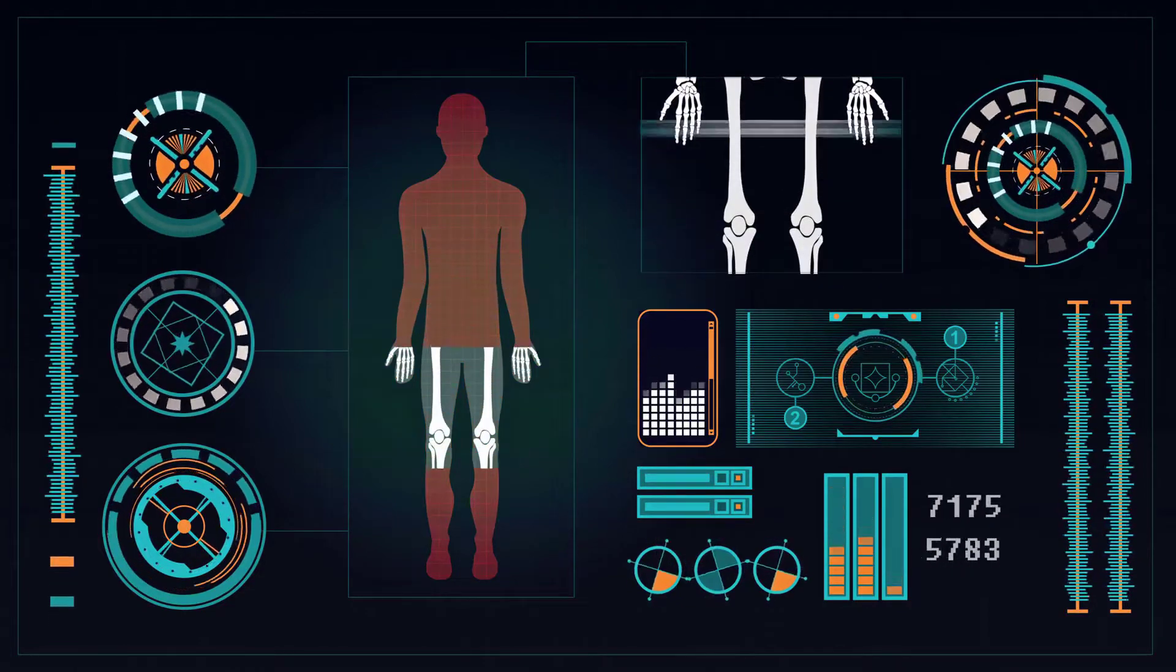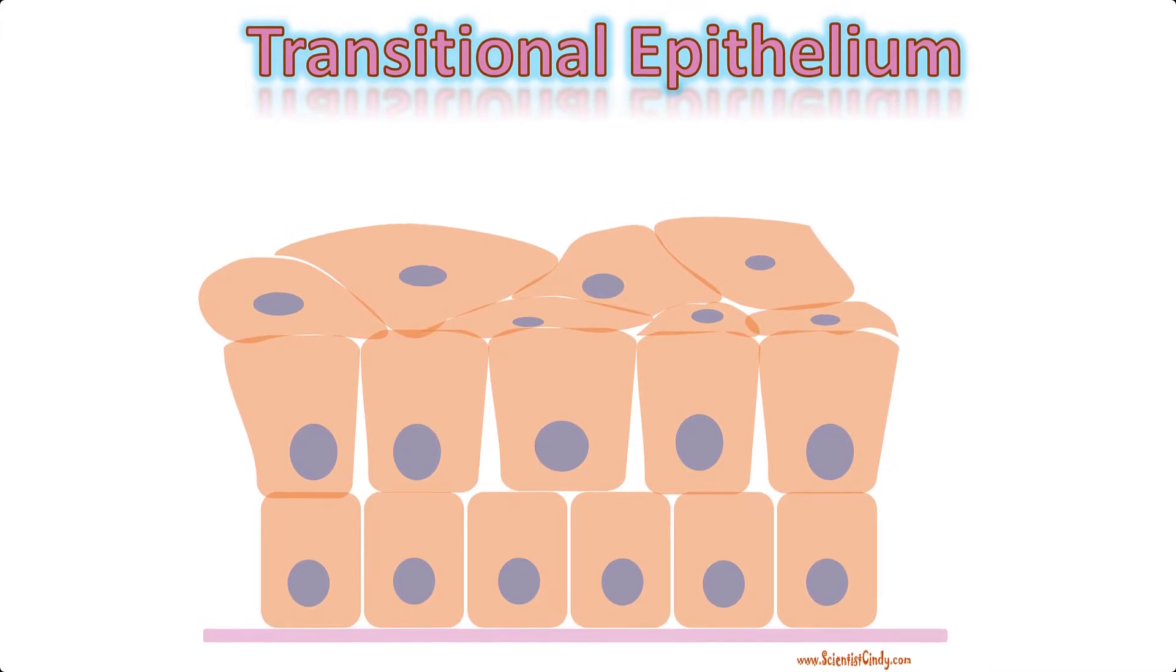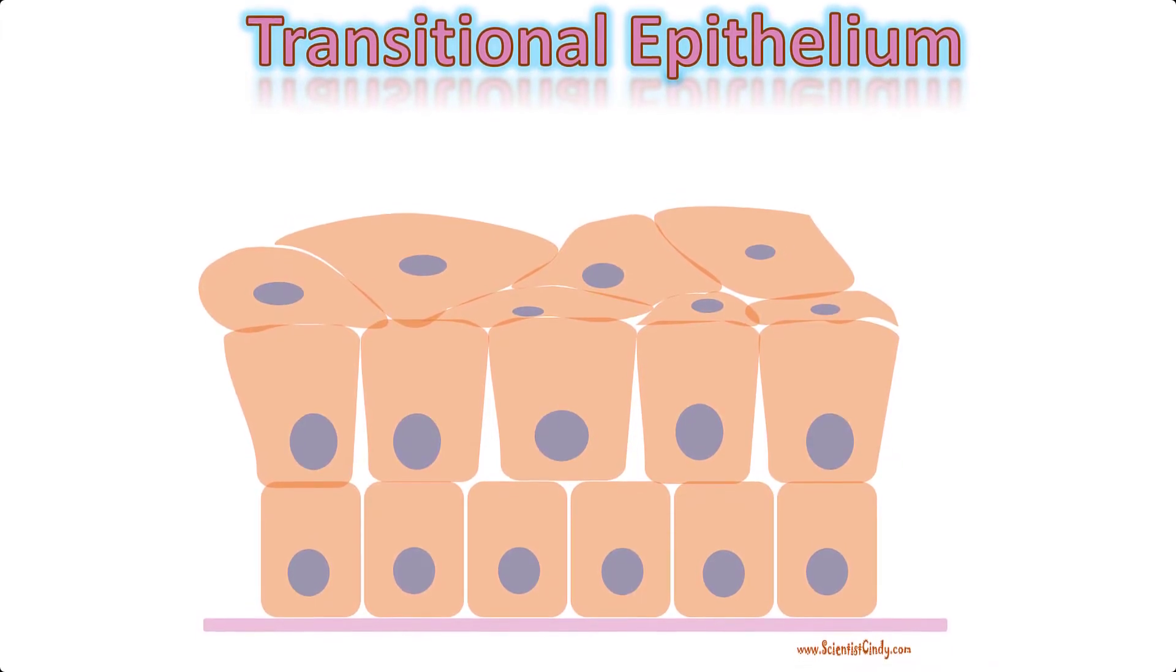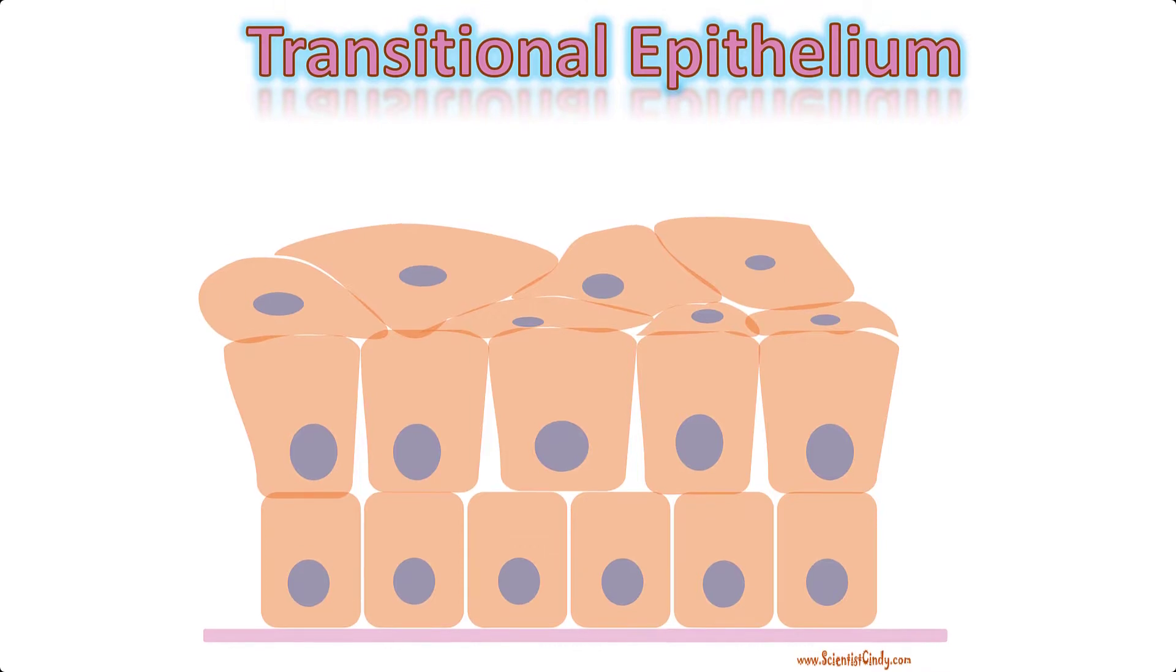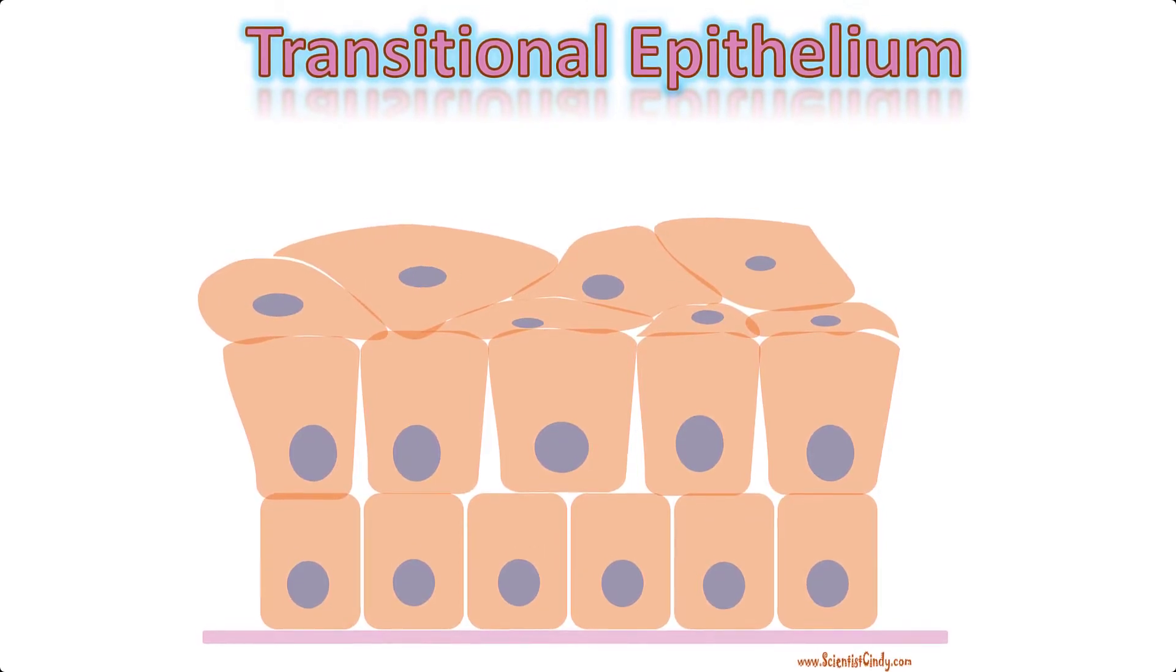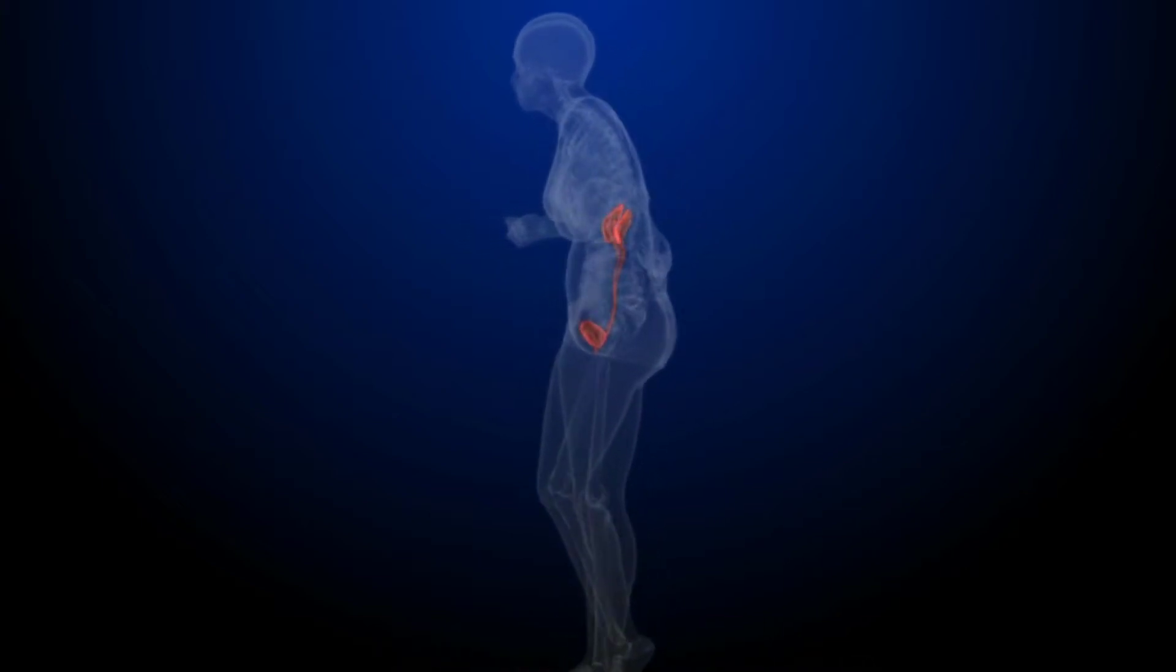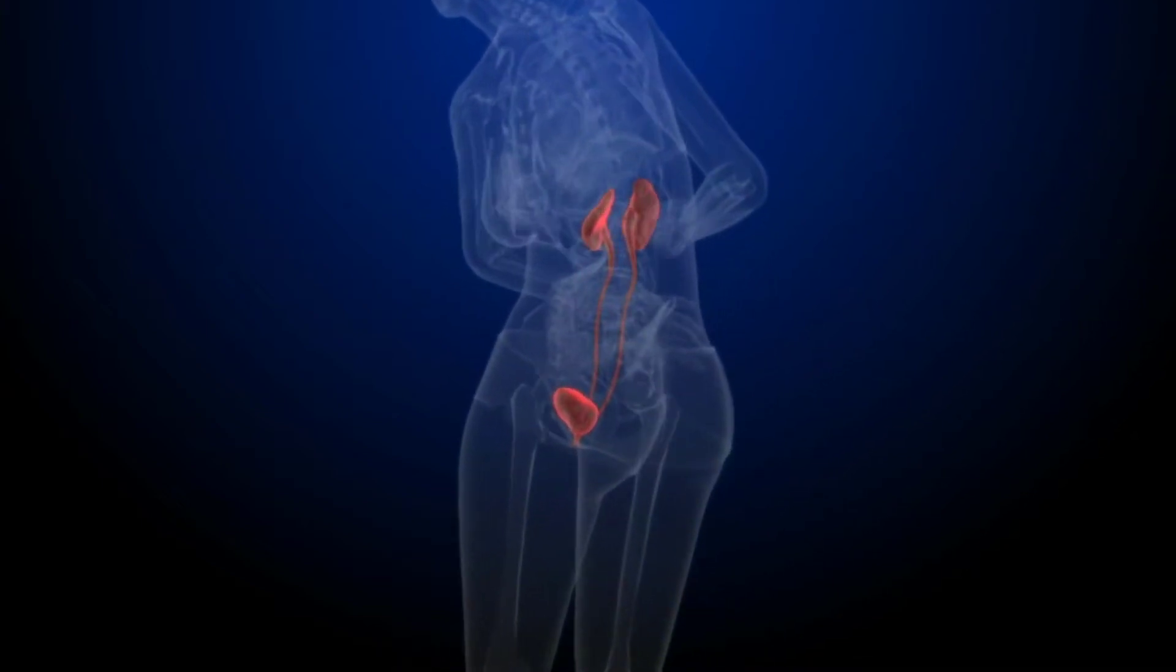Another kind of stratified epithelium is transitional epithelium, so called because of the gradual changes in the shape of apical cells as the bladder fills with urine. It is found only in the urinary system, specifically the ureters and the urinary bladder.